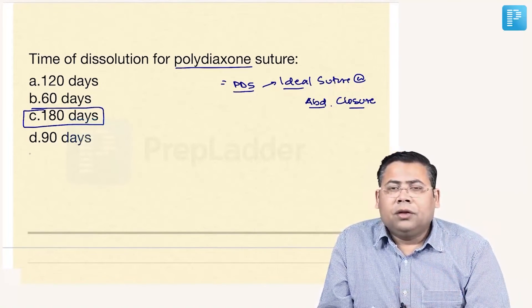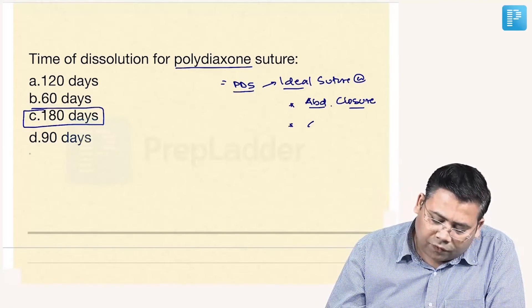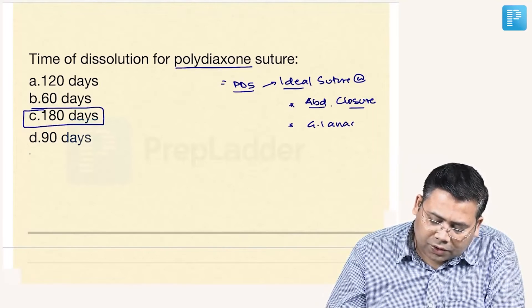The advantage is that there is no granuloma formation with this. Then it is also ideal suture for GI anastomosis, gut anastomosis.